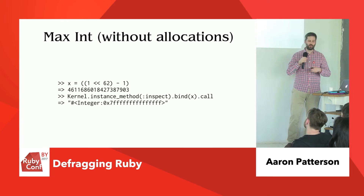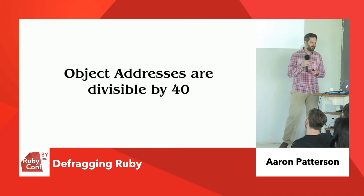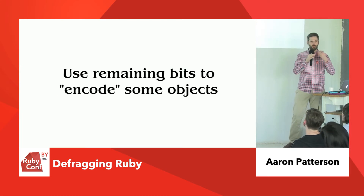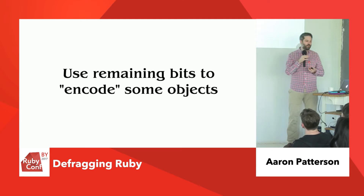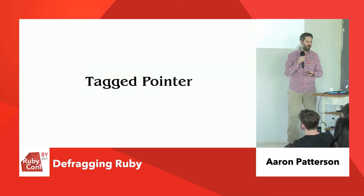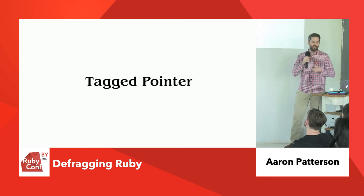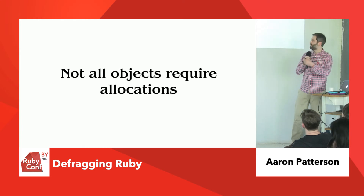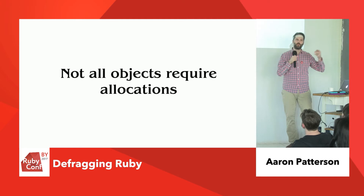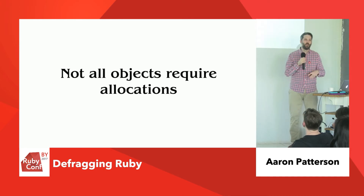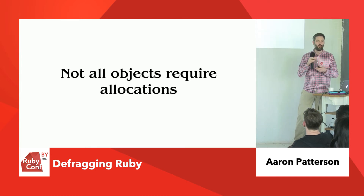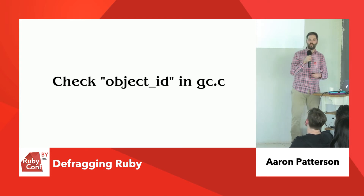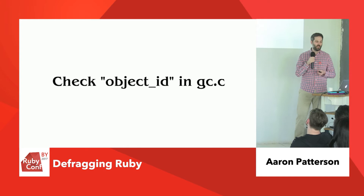So let's come back up a little bit. Stuff to remember: Ruby object addresses are divisible by 40. If it's not divisible by 40, we can use those remaining bits to encode some data — we take those three bits and assign value to them. That technique is called tag pointers; we're tagging that number with some sort of meaning in those binary digits. The other thing to remember is that not all objects require allocations. We could take integers and pass them back and forth without allocating anything. There are other objects in Ruby that can do the same thing, such as floats, true, false, and nil. If you want to know all of those objects and their encoding schemes, go check out the object_id method in gc.c — it'll show you a table with all of that information.